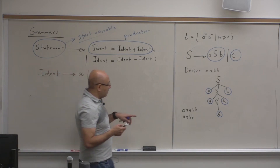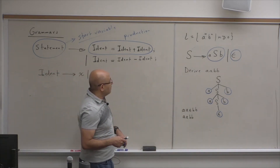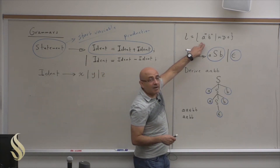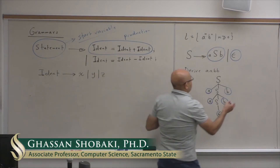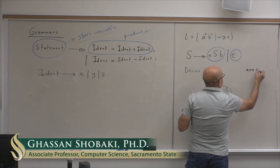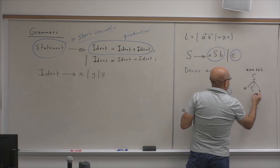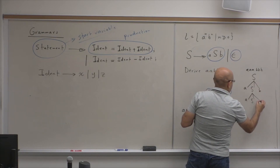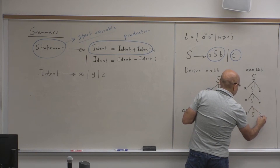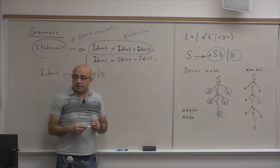So we have derived aabb. Clearly, we can derive strings with any value of n. If we would like to derive aaabbb, we just do S → aSb → aaSbb → aaaSbbb → aaabbb by substituting epsilon for S at the end. This will derive three a's followed by three b's.